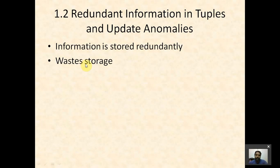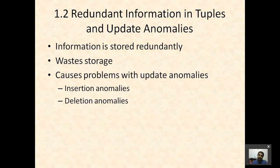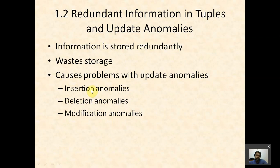Update anomalies are mainly divided into three types: insertion anomaly, deletion anomaly, and modification anomaly. If we store redundant information in the tables, then insertion anomalies, deletion anomalies, and modification anomalies can occur. We will see what each of these anomalies means in the next slides.